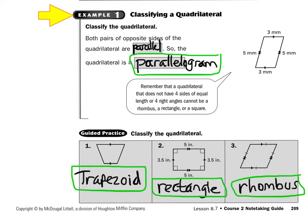Take a look at number two. It has two pairs of parallel sides and four right angles, so that means it's a rectangle. And then take a look at number three. It has two pairs of parallel sides, and see this little tick mark? That means all four of the sides are the same length. This is what we call a rhombus.